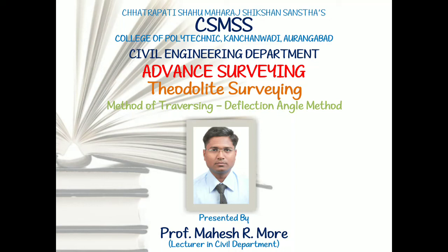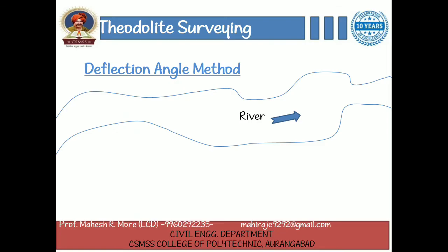Hello, welcome to online lecture of advanced surveying. Today we have learnt the method of traversing. There is another method called the deflection angle method. This method is suitable for open traverse and is mostly employed in survey of rivers, coastal lines, roads and railway lines.